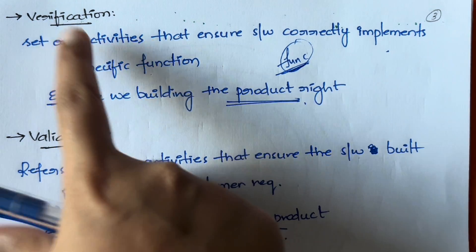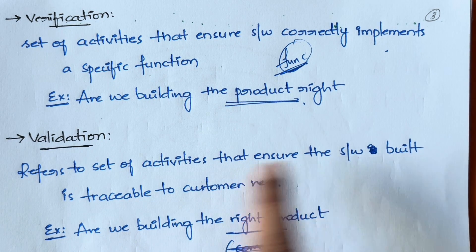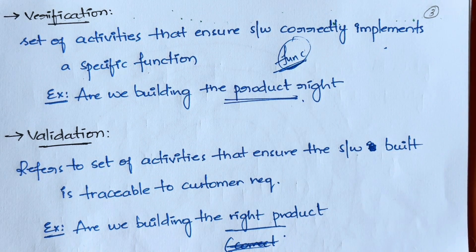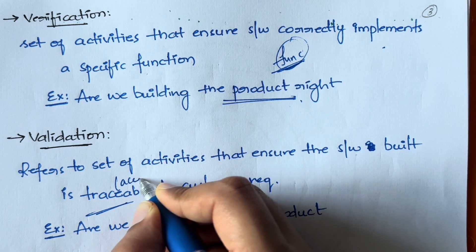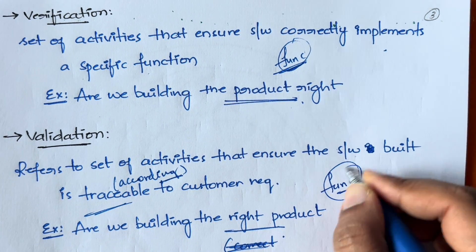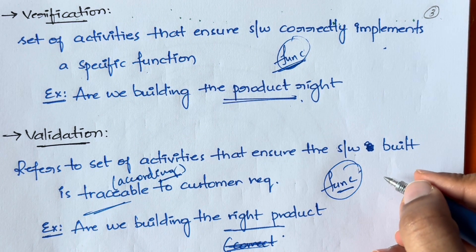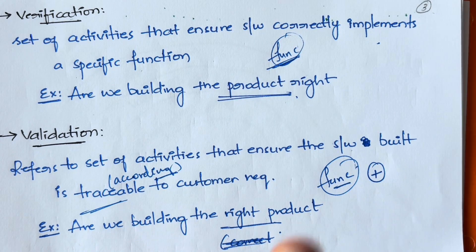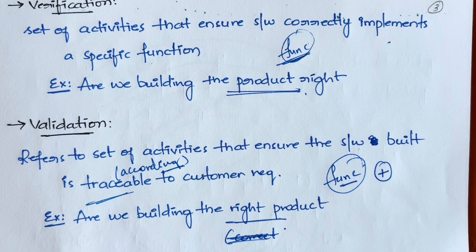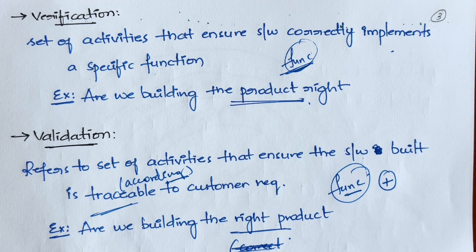Validation refers to a set of activities to ensure that the software build is traceable to the customer requirements — simply, is it according to what the customer wanted? Here we check whether we are developing the correct functionality. For example, if you are developing a calculator, the plus symbol should add two things — whether it is doing that or performing some other operation, that is what you check in validation. These two are very important in testing.